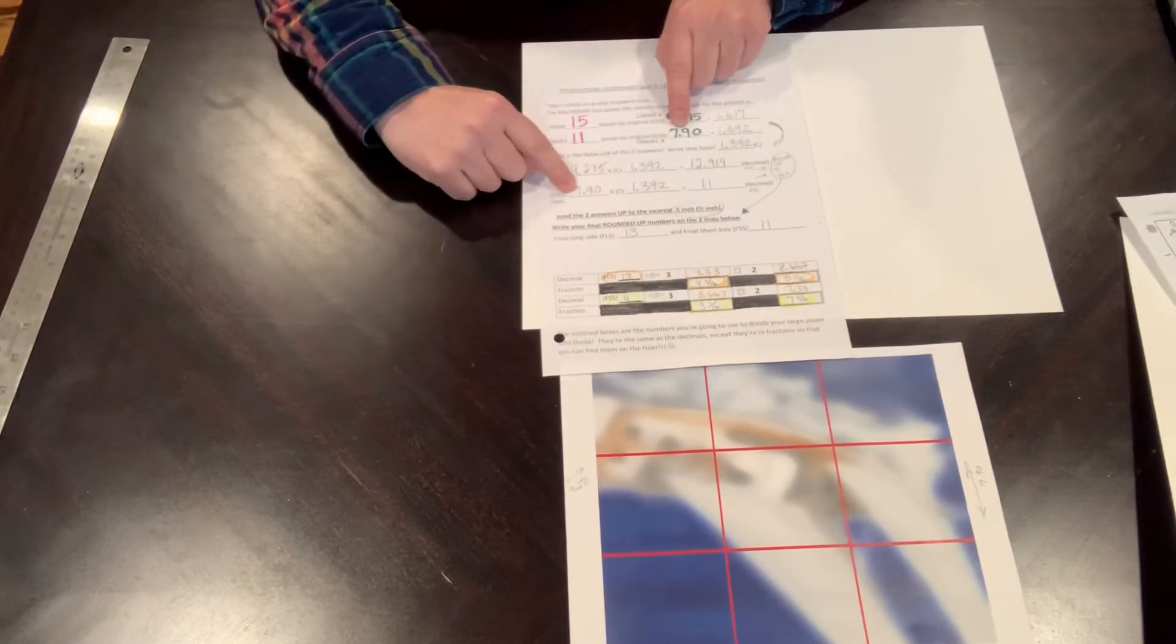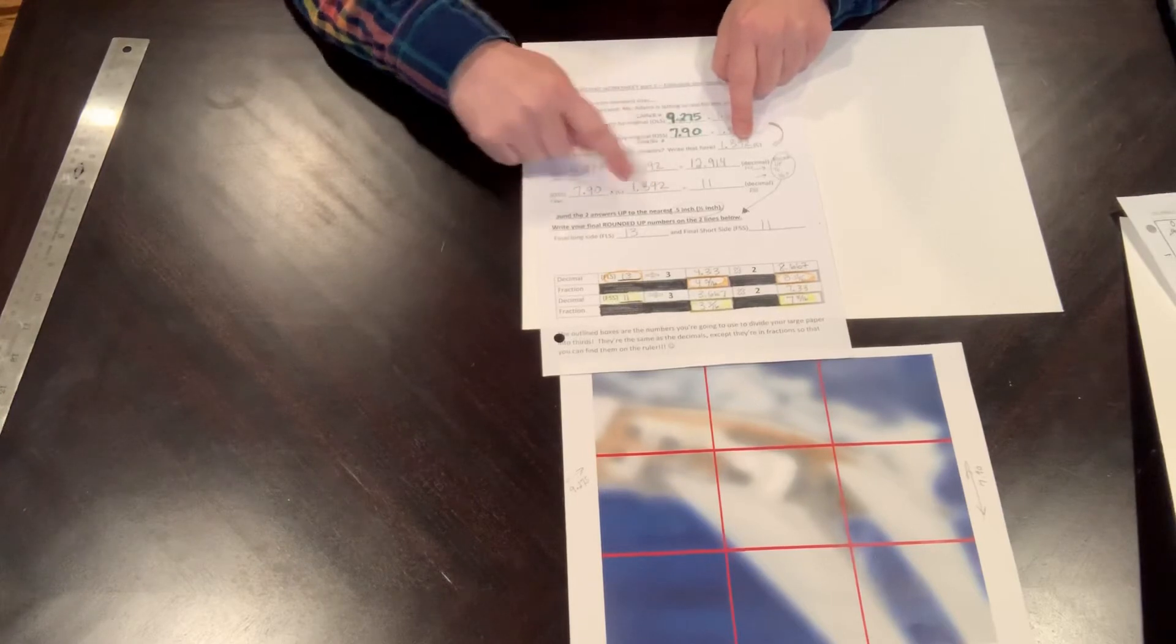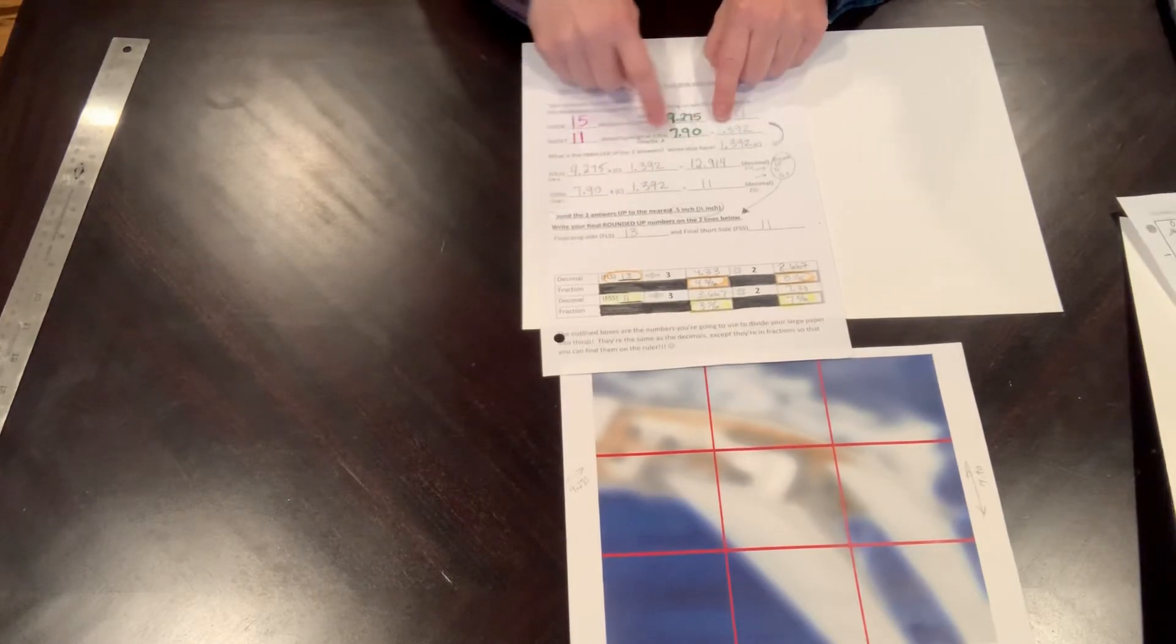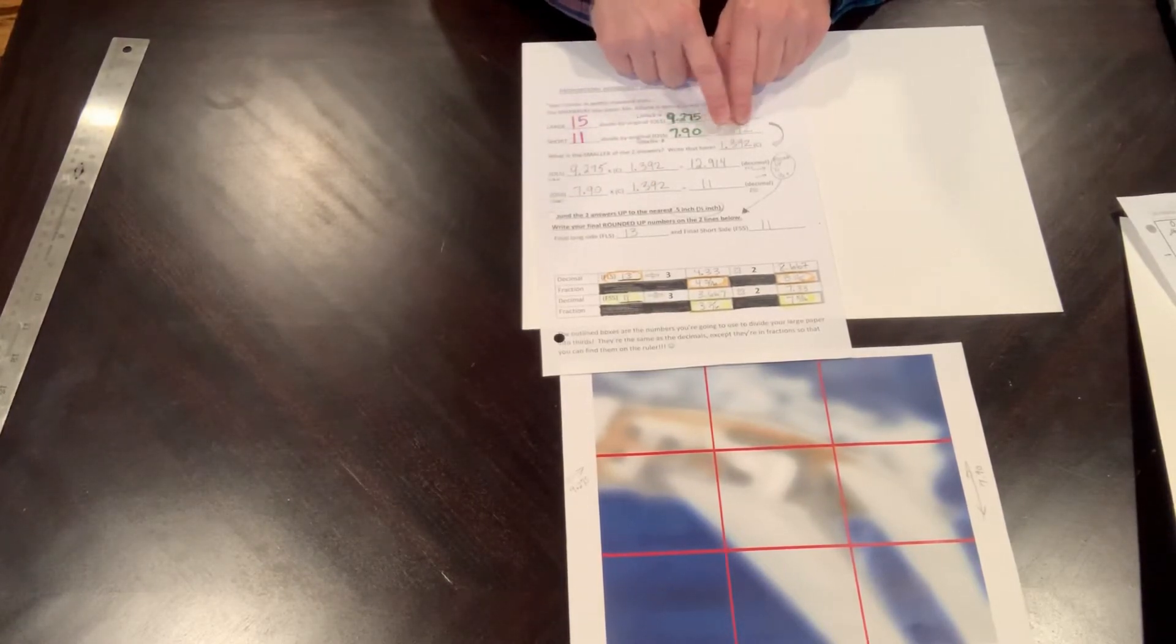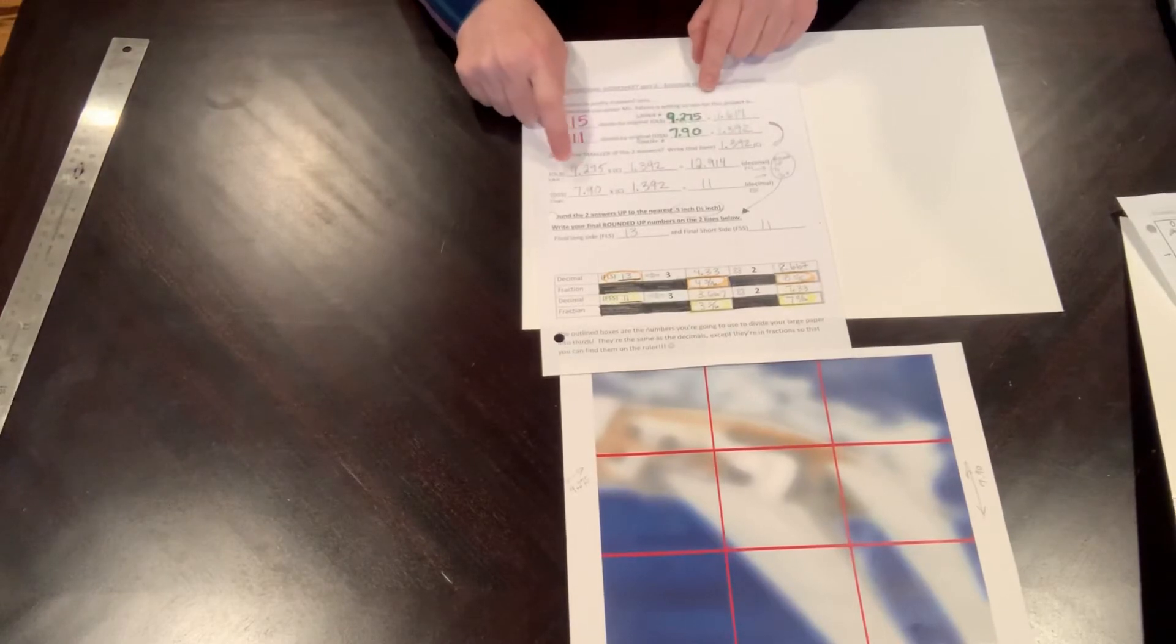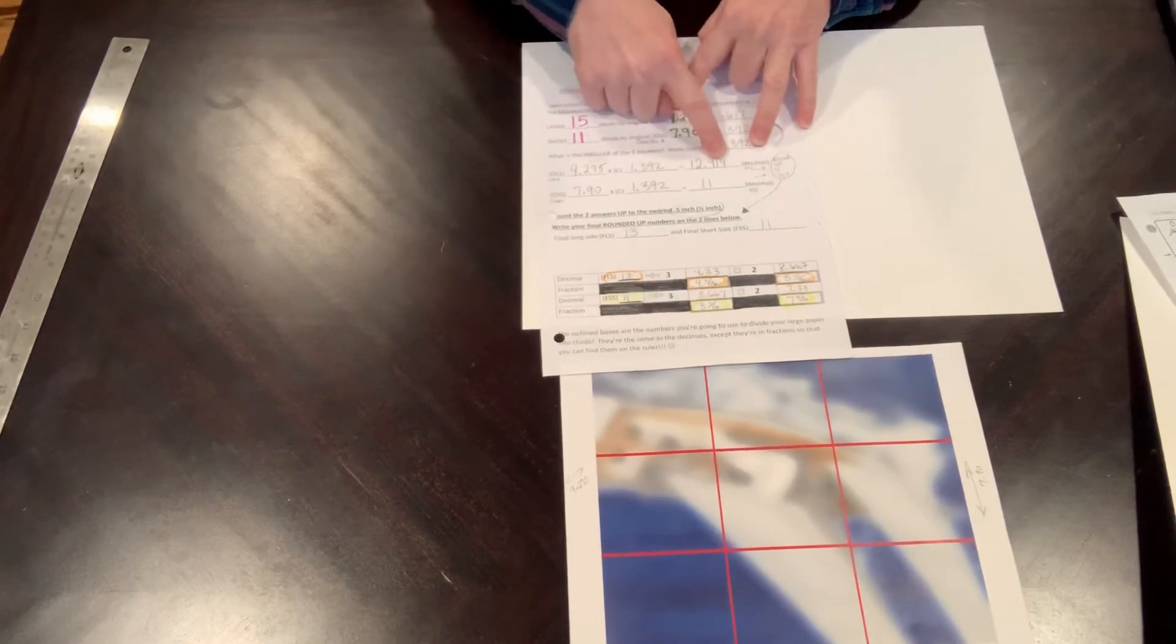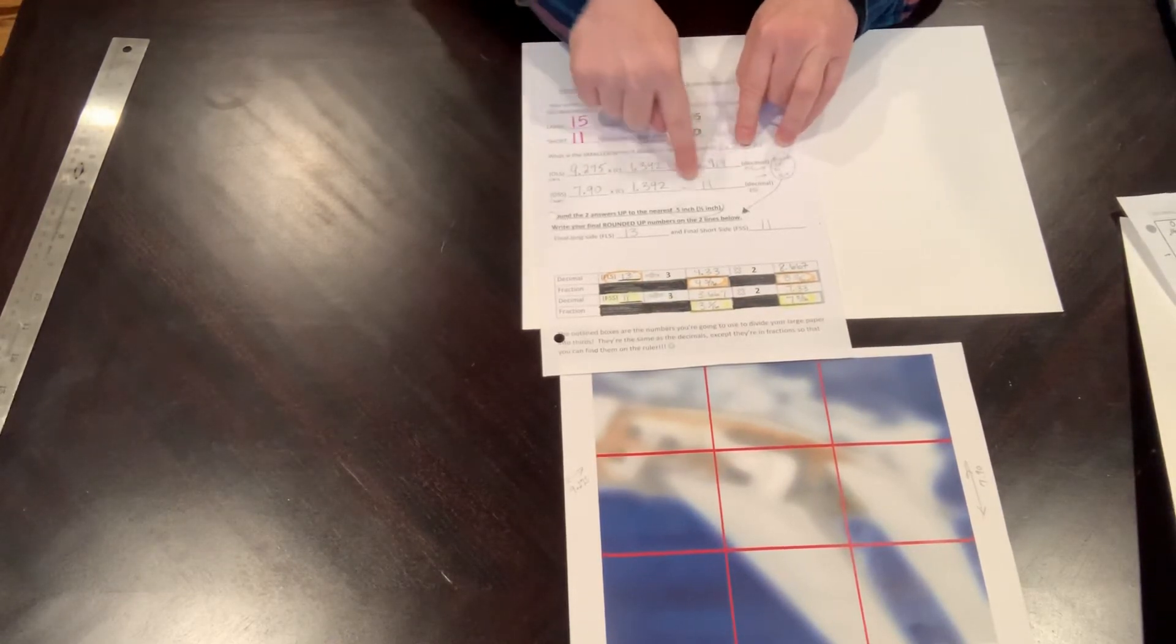I know that 11 divided by this is this, so therefore 7.90 times 1.392 should be 11. But the one I have to do on my calculator is 9.275 times my smaller number, which is 12.914. So now I'm working with these two numbers here.